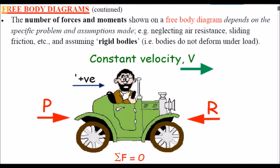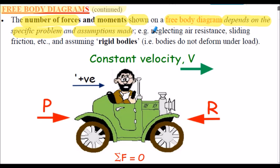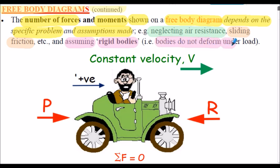The number of forces and moments shown on a free-body diagram depends on the specific problem and the assumptions made. For example, air resistance may be neglected but sliding friction may be included. It's also very important to note that free-body diagrams assume the bodies considered are rigid — in other words, the bodies do not deform under the applied load.